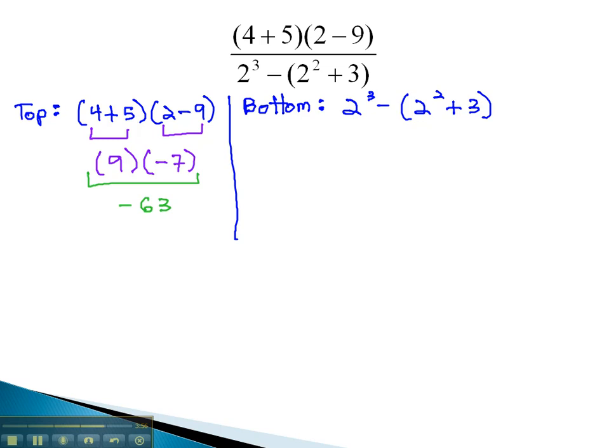Again, order of operations starts us in the parentheses. And again, we start with the exponents. Now, we have 2 cubed, minus 2 squared, which is 4, plus 3. Now, we finish the parentheses, adding the 4 plus 3. 2 cubed, minus 7.